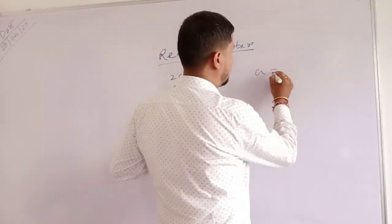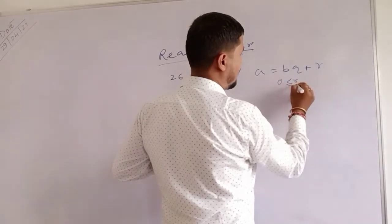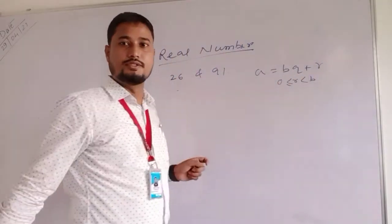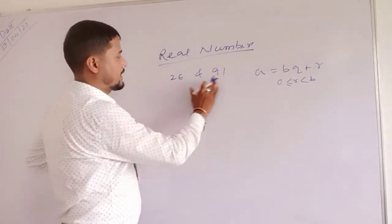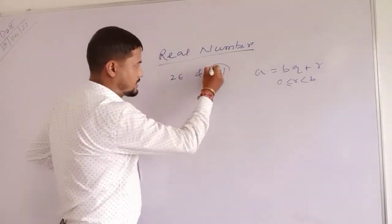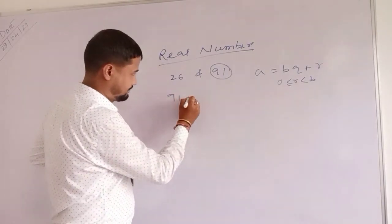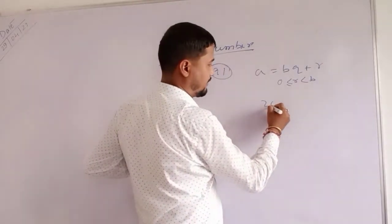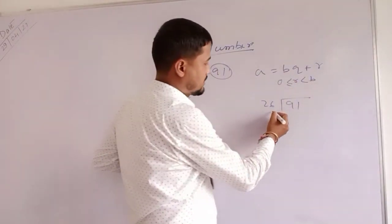Take 26 and 91. Which one is the greater number? 91. So first you divide 91 by 26. 91 equals 26 into 3 plus 13.